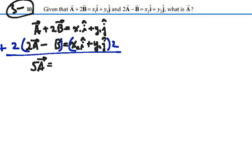And then on the right, I'm going to have x1 plus 2x2 times i plus y1 plus 2y2 times j.